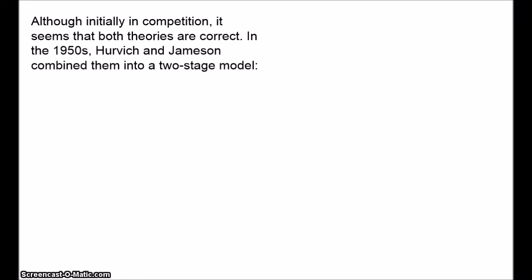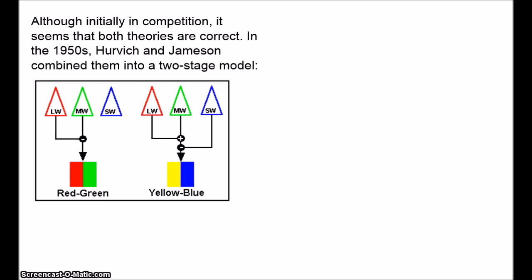The opponent process theory was initially in competition with the trichromatic theory, but the current consensus is that they're both correct. In the 1950s, Leo Hurvich and Dorothea Jameson combined the two theories into a two-stage model. We have three types of photoreceptors — long, medium, and short wavelength — and these feed into two types of colour opponent channel. The L and M cones feed the red-green channel, which calculates the difference between the two cones. For the yellow-blue channel, input from L and M cones is summed to make yellow, then the channel computes the difference between the S cones and this sum. The yellow-blue channel involves all three cones. The end result is four opponent colours but only three types of cone.